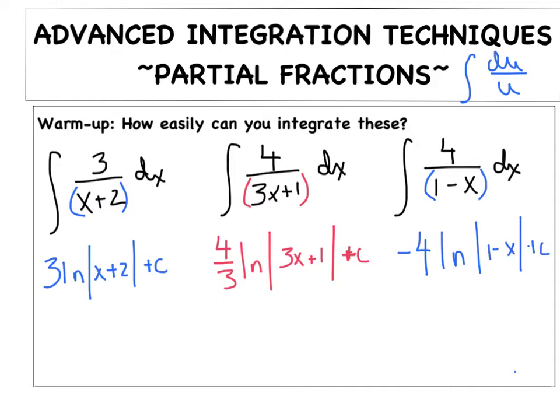What I want you to watch out for is, what if I put 4 over the quantity 1 minus x squared? In this particular case, we would only let u equal the inner function of the denominator, and we wouldn't get du over u. We'd end up getting something like du over u squared, which we would rewrite as u to the negative 2, and we'd use our power rule.